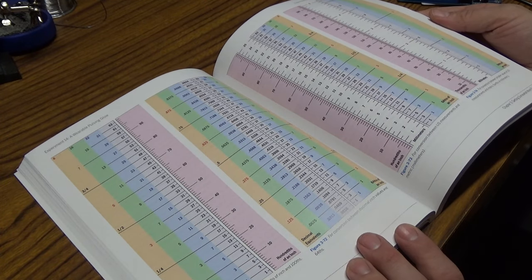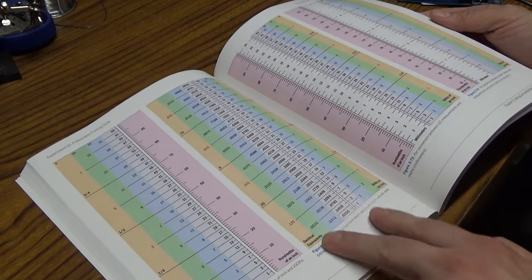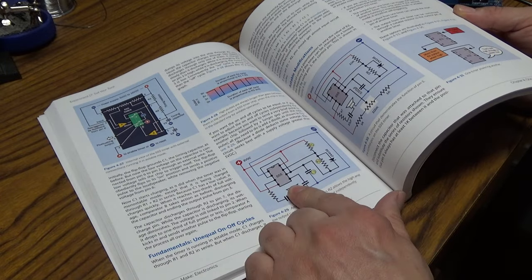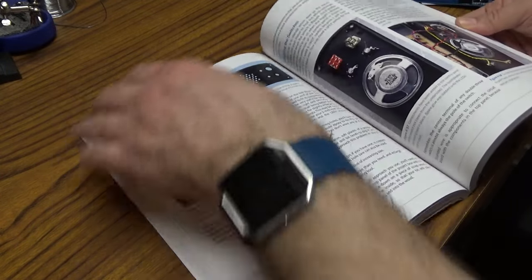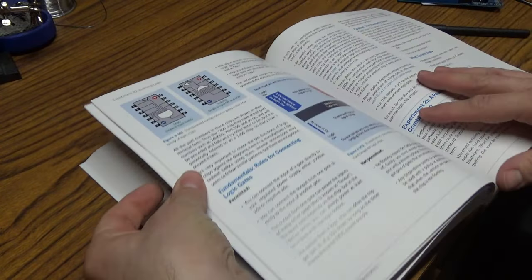And then what's this conversion between inch values, so conversion tables. Working with 555 timers.